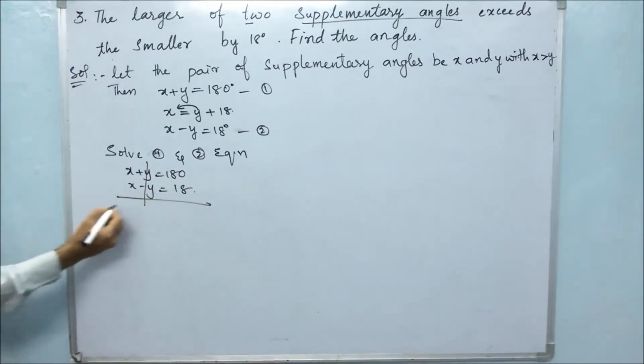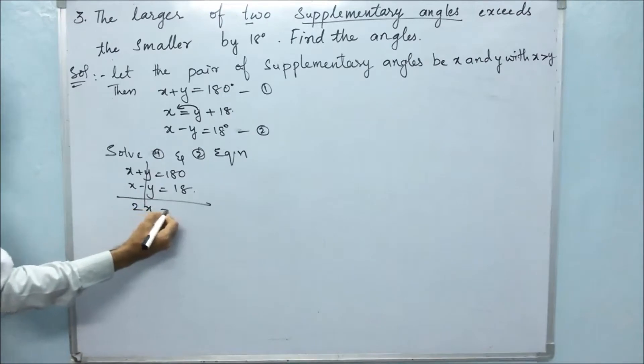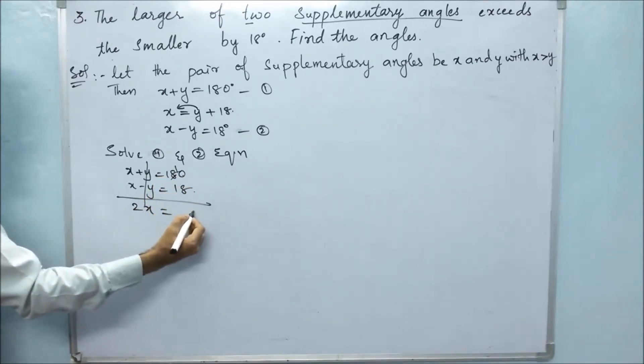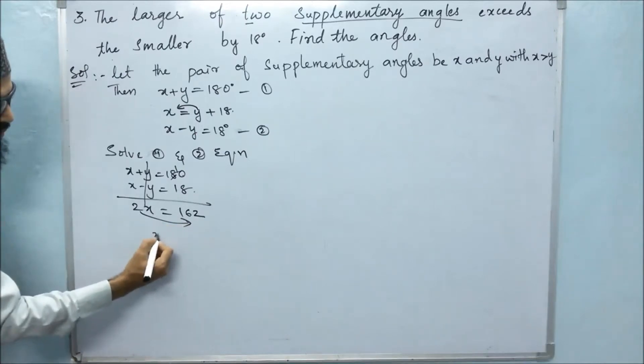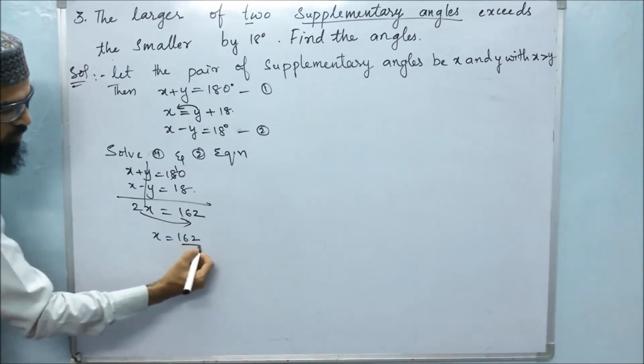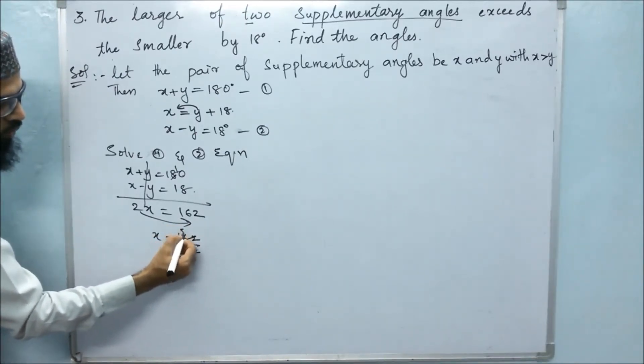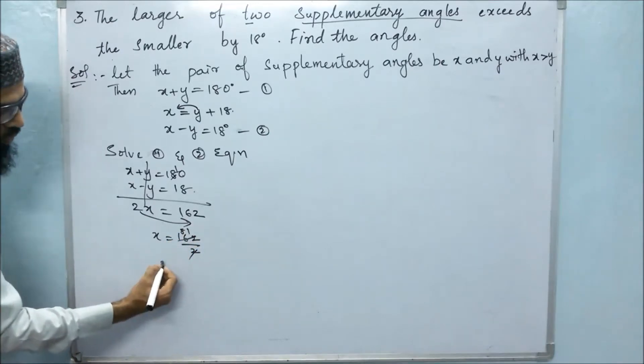Y minus y gets cancelled. X plus x, 2x equals - 10 minus 8, 2, and 7 minus 1, 6 - 162. 2 goes down. So x equals 162 by 2. 2 eights are 16, 2 ones are 2. Therefore, x equals 81.